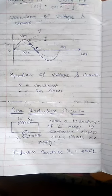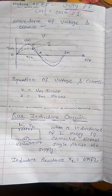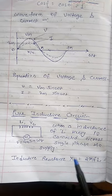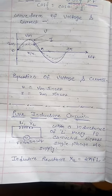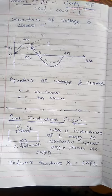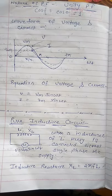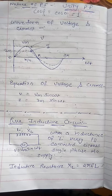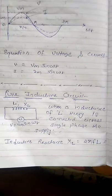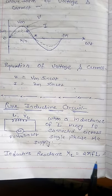Next comes the pure inductive circuit. In a pure inductive circuit, an inductance of L Henry is connected across a single phase AC supply. We already know that if there is inductance, then inductive reactance is present. Inductive reactance is the property of inductance that opposes the flow of current. The formula is XL is equal to 2πFL, and its unit is ohm.